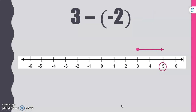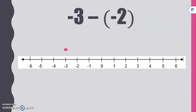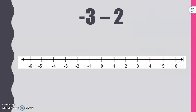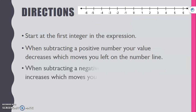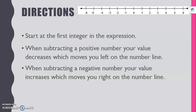Don't forget — let's go back and look at our rules. We always start at the first integer in the expression. When subtracting a positive number, your value decreases and moves you to the left. When subtracting a negative number, your value increases and moves you to the right.